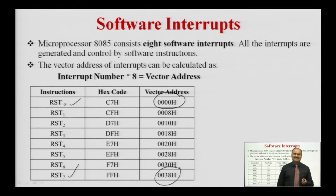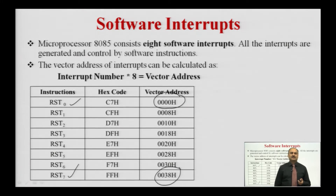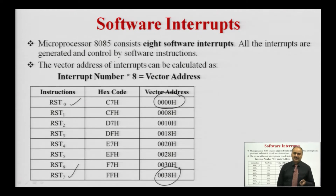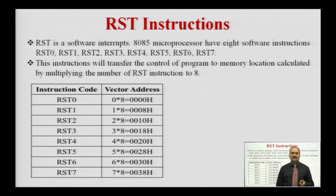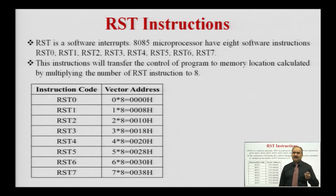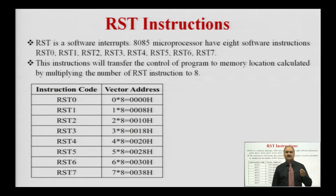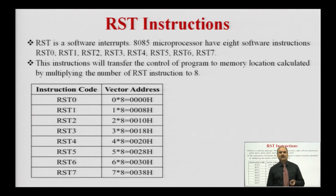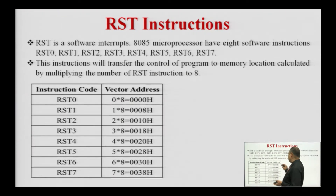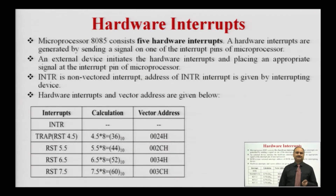With the help of this formula, we can obtain the vector address where the interrupt service routine is present, and the processor executes the interrupt service routine at the vector address. The RST instructions are the 8 software interrupts of the 8085 microprocessor — RST0 to RST7 — and each has a corresponding vector address obtained by multiplying the interrupt number by 8.